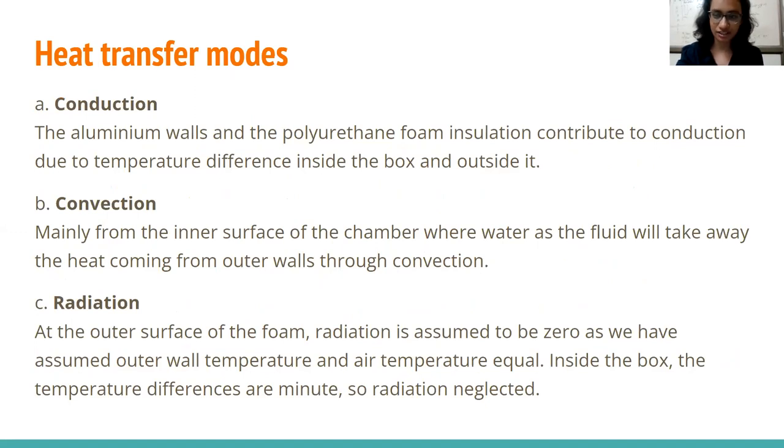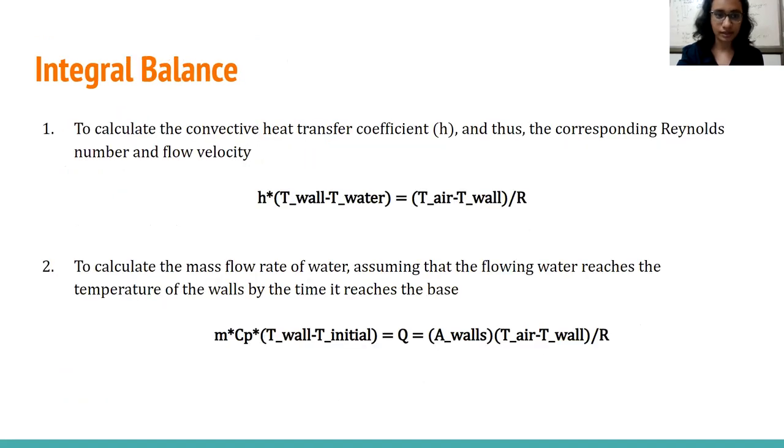So the heat transfer modes are as follows. There is conduction, convection and radiation. Radiation is assumed to be negligible or zero as we have outer wall temperature at air temperatures approximately equal. Inside the box the temperature differences are so minute that radiation is neglected. So we have convection happening mainly from the inner surface of the chamber where water as a fluid will take away the heat coming from outer walls through convection and the conduction will happen through aluminium walls and the foam layer. We perform an integral balance to calculate the convective heat transfer coefficient and thus the corresponding Reynolds number and flow velocity that we are interested in. So basically we equate the heat that is given by the environment to the heat that water would be taken from the surface. Then we calculate the mass flow rate. We assume that the flowing water reaches the temperature of the walls by the time it has reached the base. And that is the equation given for this.